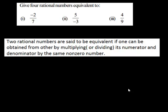In this problem, we have to find 4 rational numbers equivalent to negative 2 upon 7, 5 upon negative 3, and 4 upon 9. Let us see how to do that.